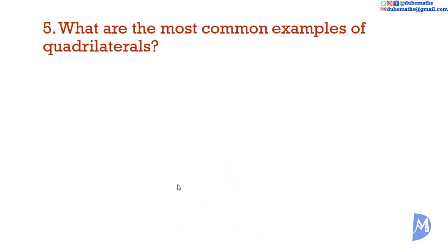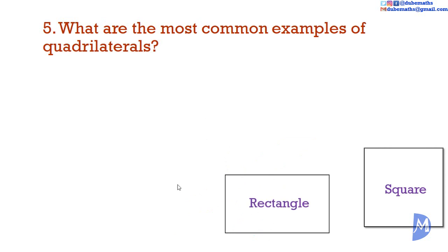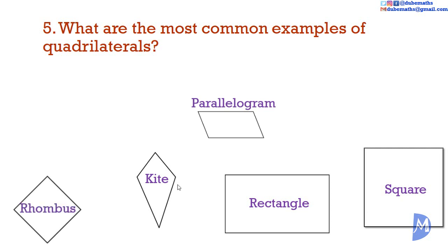Question 5. What are the most common examples of quadrilaterals? The most common examples of quadrilaterals are... Do you know their names? Square, rectangle, kite, parallelogram, rhombus, and trapezium.